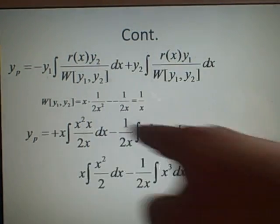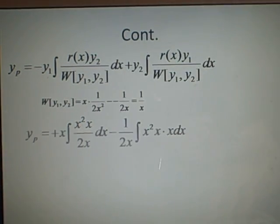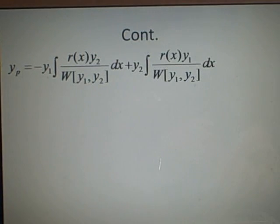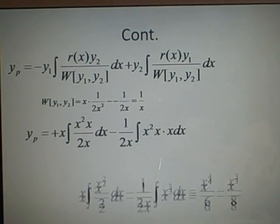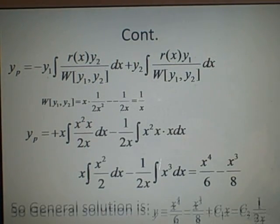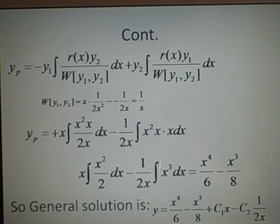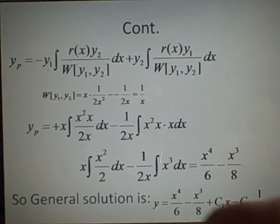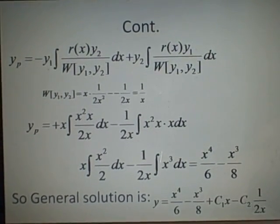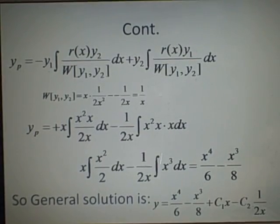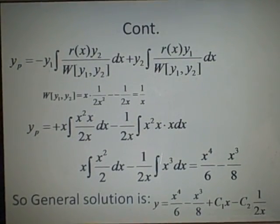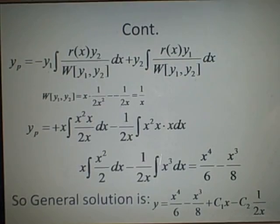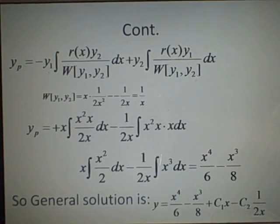This is our yp that we've generated. We've got our y1 and y2, so we just add the constants c1 and c2 in. The general solution is y equals x to the 4 over 6 minus x to the 3 over 8 plus c1·x minus c2 times 1 over 2x.